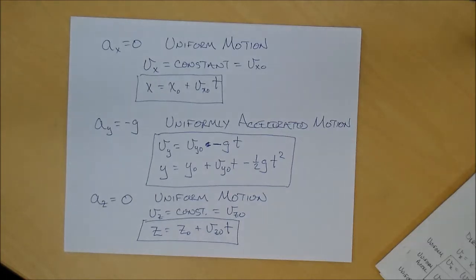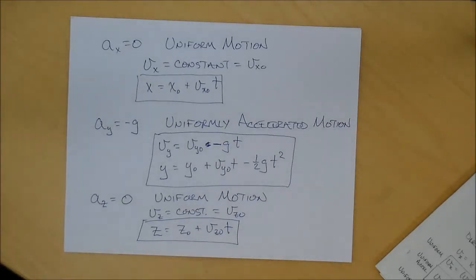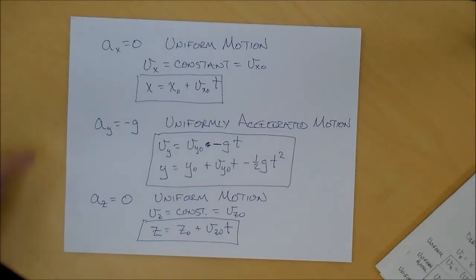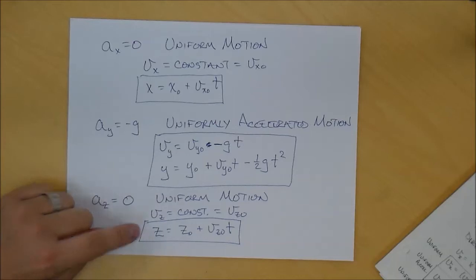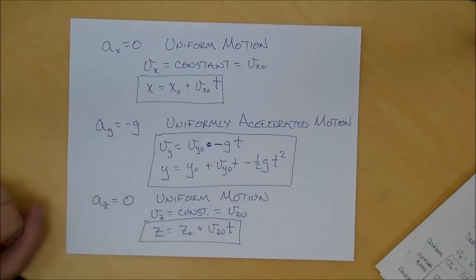So if you're given all the initial conditions about the motion of a particle in a gravitational field — like a ball you throw — and the time over which it evolves, you can determine the final position of the particle.